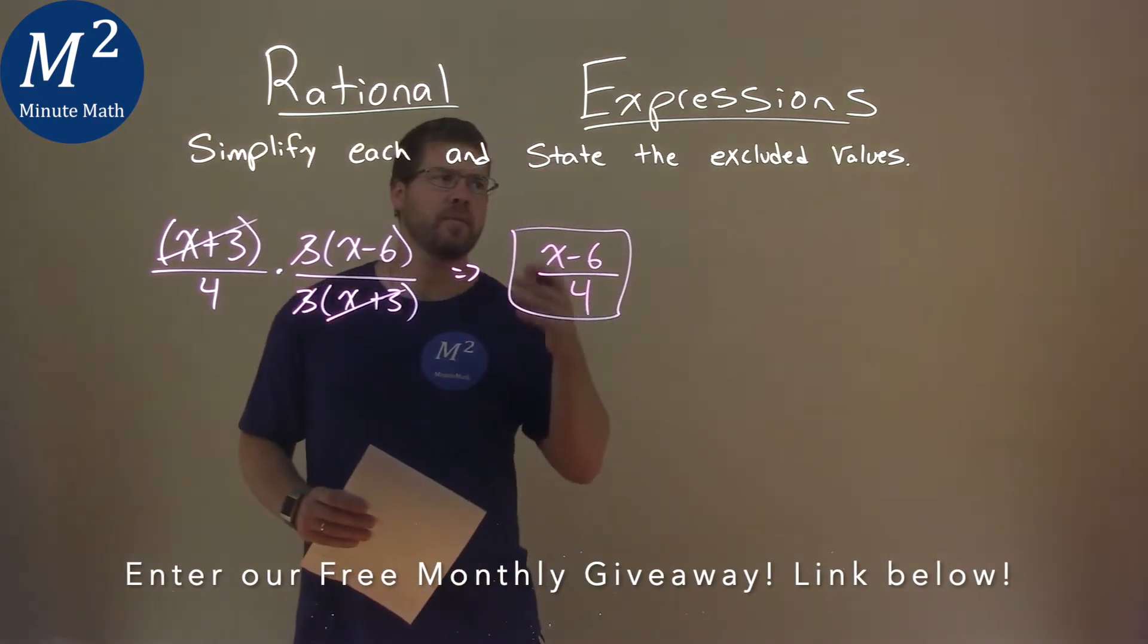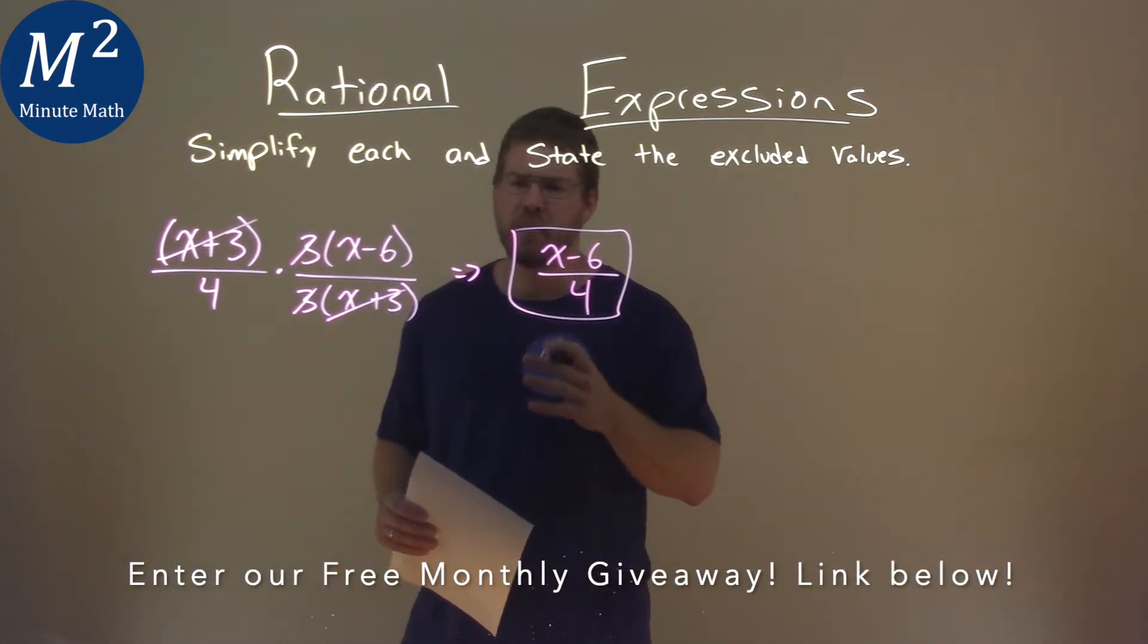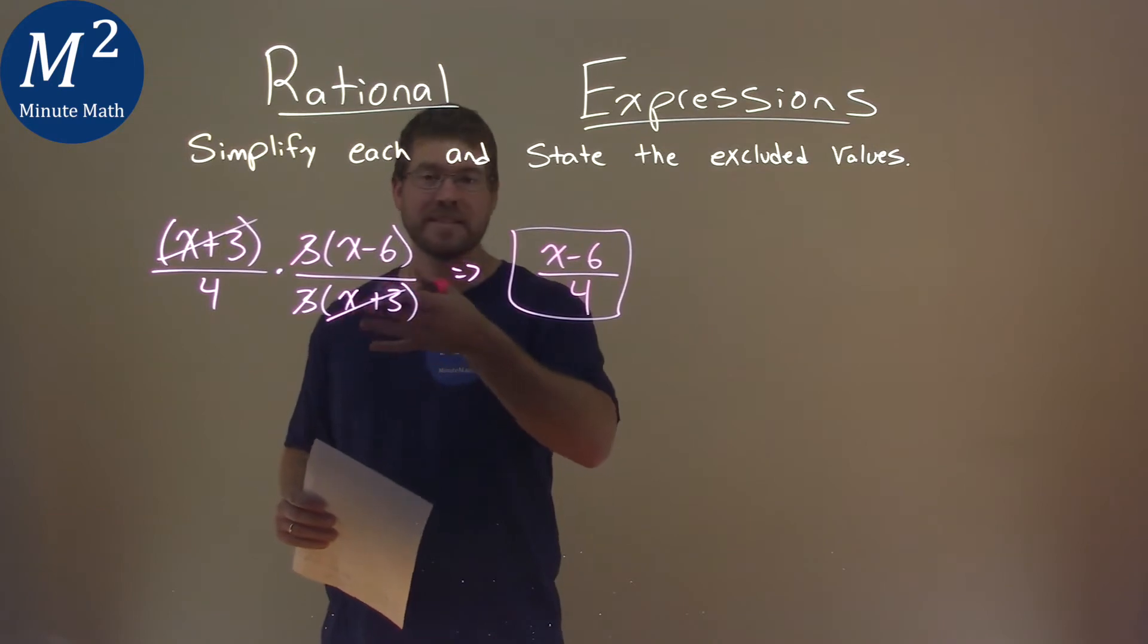But they still asked us to find the excluded values. With rational expressions, that's when our denominator equals 0.